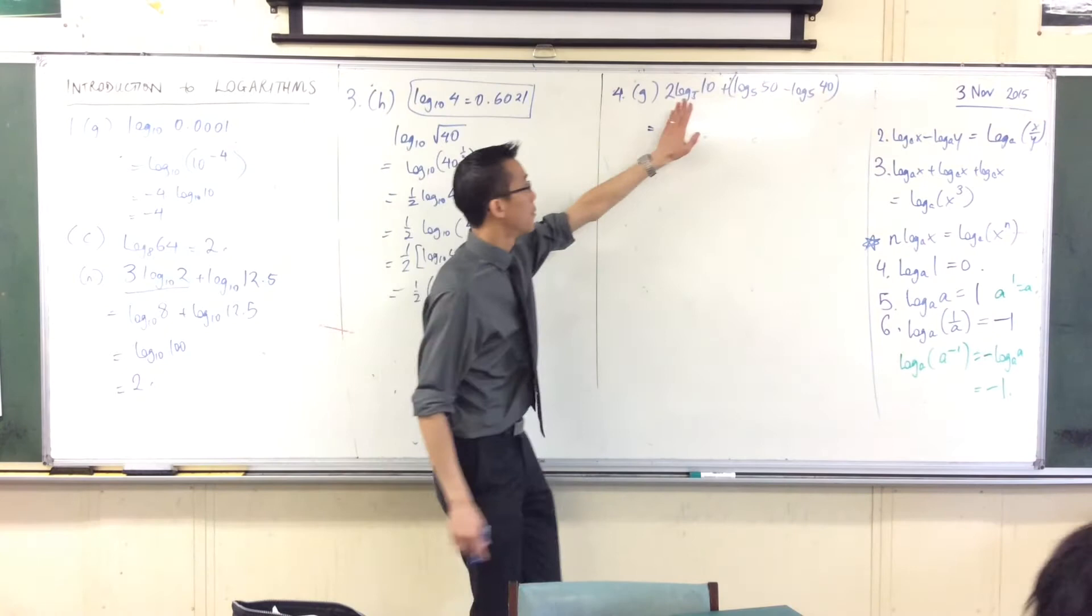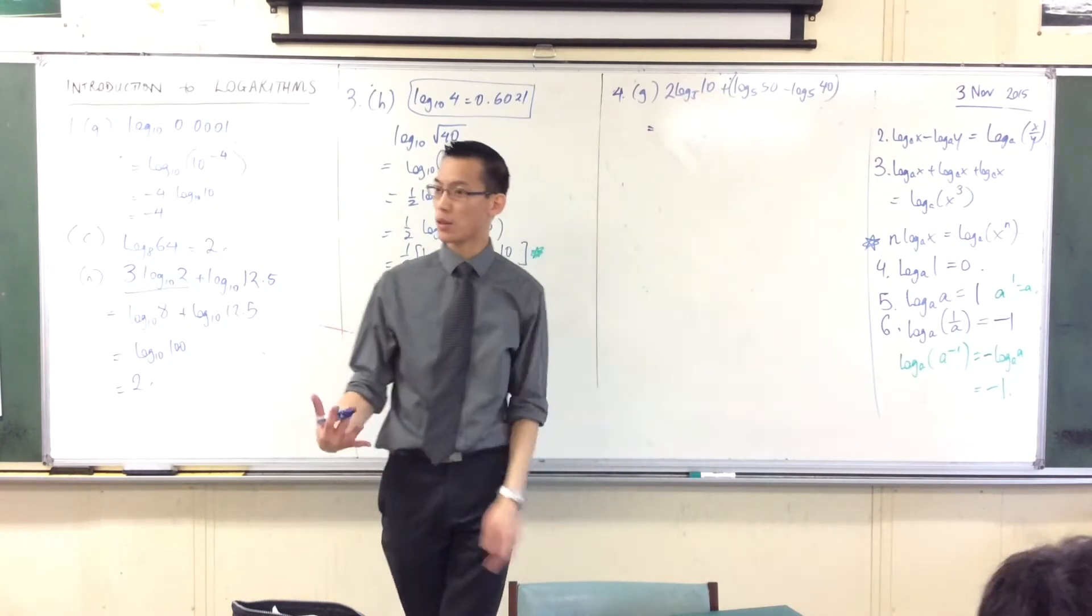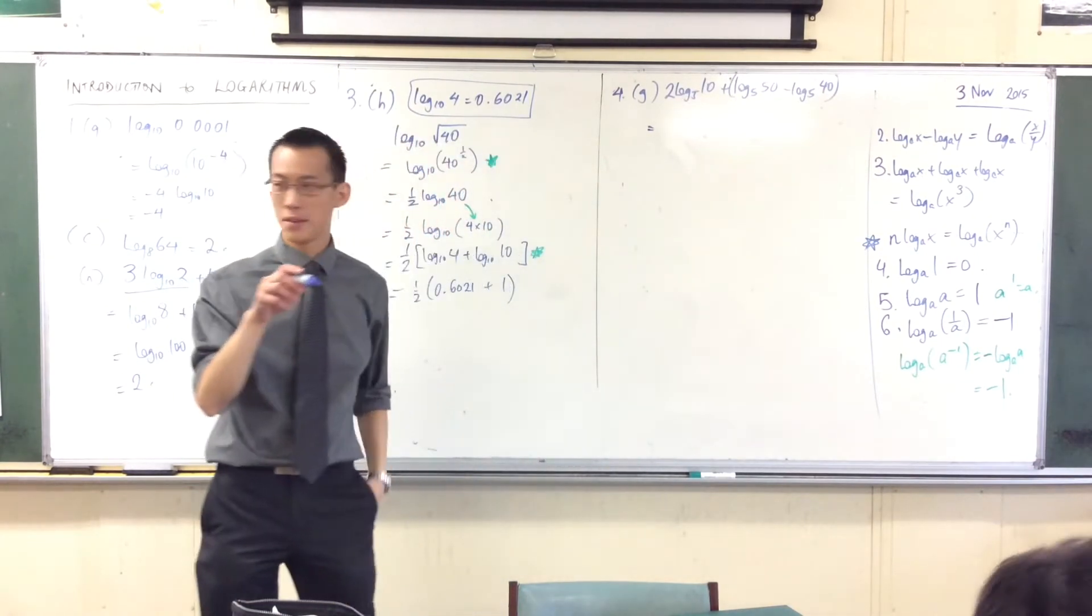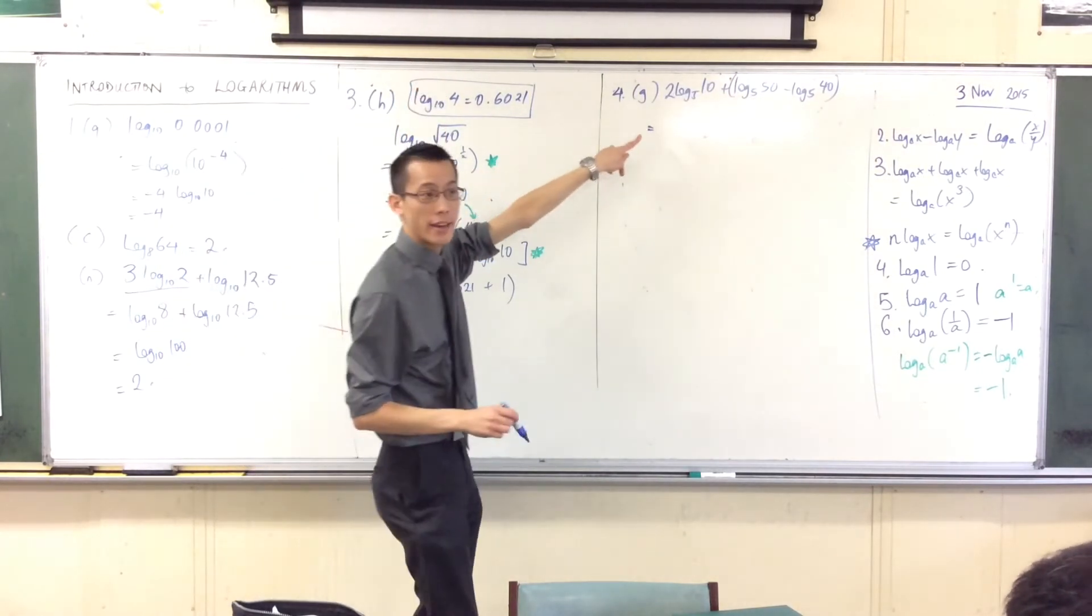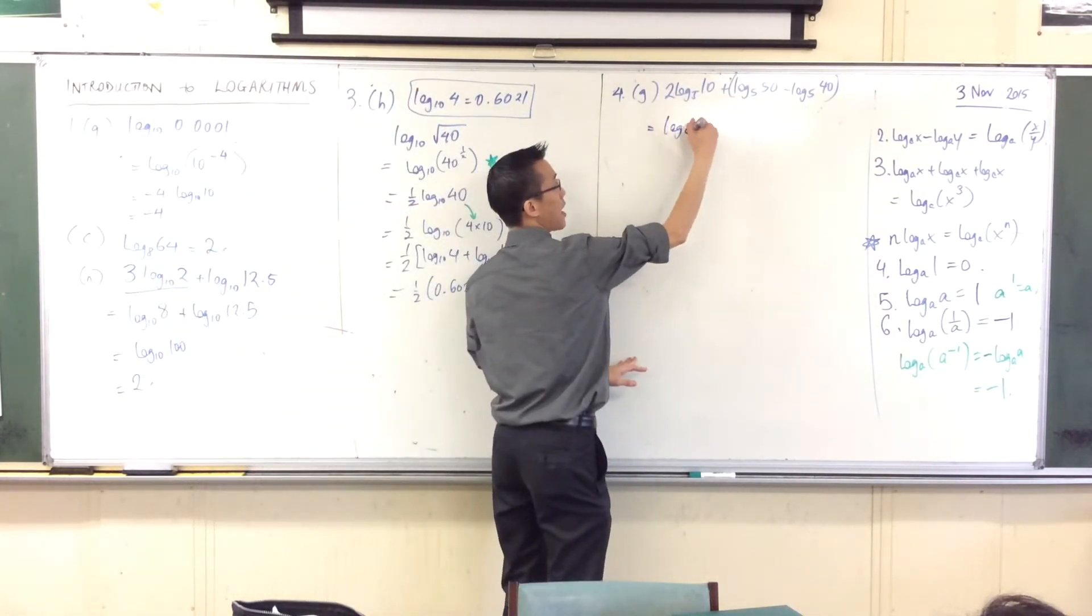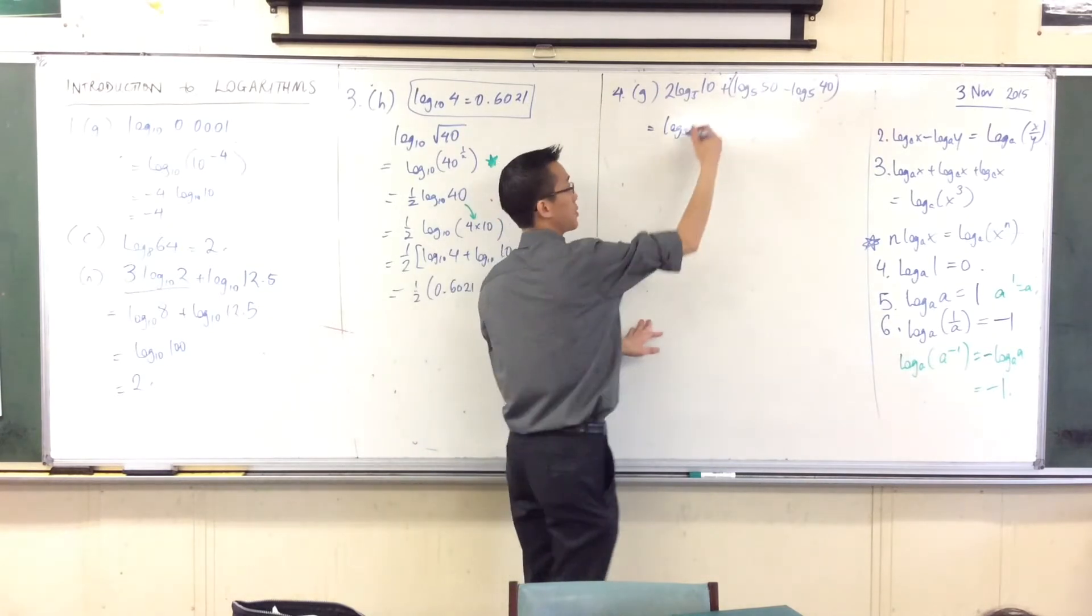So for instance, first log. This is the reverse of the power law, isn't it? So what's that two going to do? It's going to come out to the top. It'll become 10 squared. So that will be log base five of what? A hundred. That's what 10 squared is. Good.